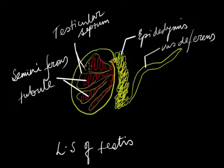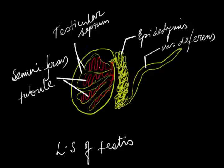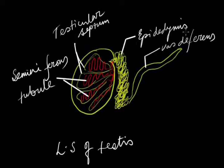These compartments contain a tubular structure, which is a very important structure of the testes, known as the seminiferous tubule. The seminiferous tubule unites at the posterior part of the testes, which is known as the rete testis, and finally it leads into a coil-like structure outside the testes called the epididymis. And finally, the epididymis leads into a fine tubular structure called the vas deferens.